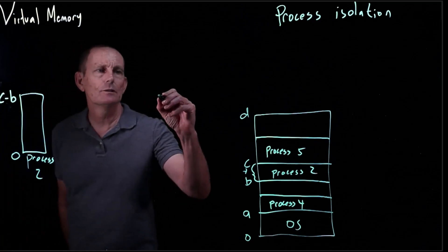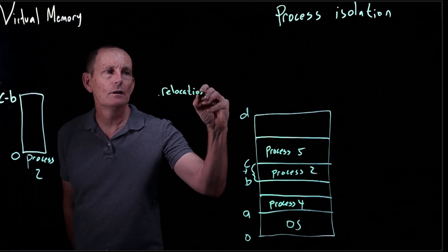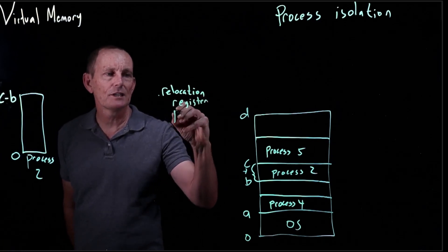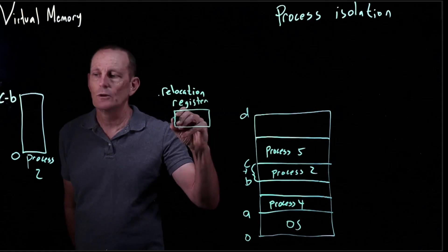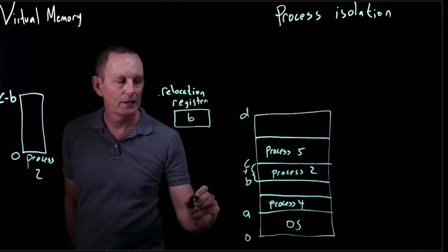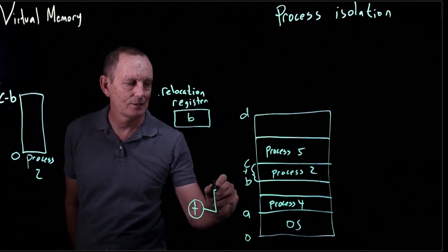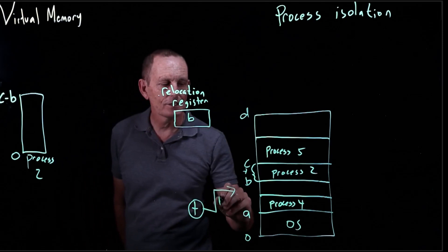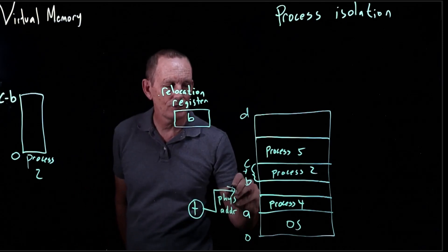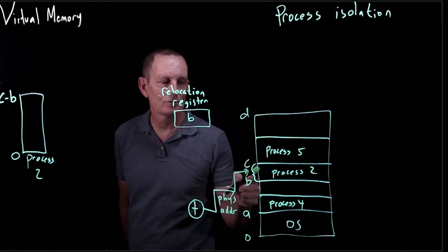And so we'll still have the relocation register. That relocation register for process two will still have the value of B. And we will still add that getting the physical address, so that's going to locate this starting at B.